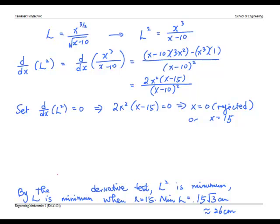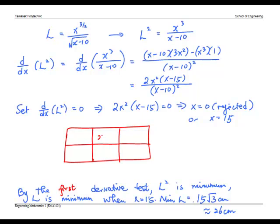We can also use the first derivative test. To get the same conclusion, we make a table. And consider what happens on the left of x equals to 15, which is x less than 15, and on the right, which is x greater than 15.